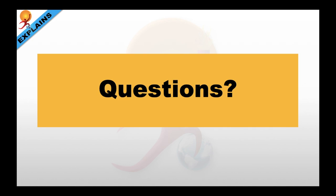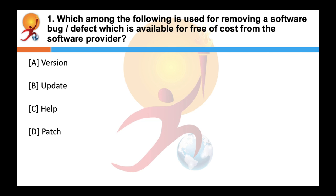Here we'll be taking the questions from the quiz and deal with their relative terminologies. Which among the following is used for removing a software bug or defect which is available for free of cost from the software provider? Correct answer is a patch. A software patch normally fixes bugs or some kind of problems but they can also be released to address security vulnerabilities and any inconsistencies in a piece of software.